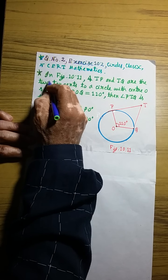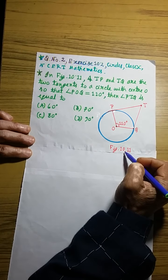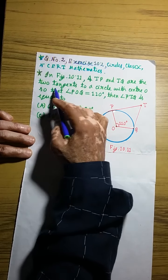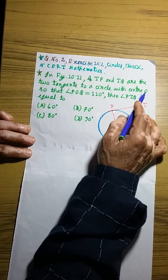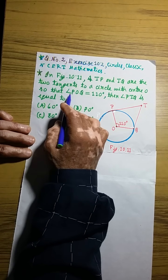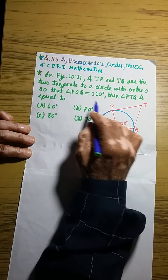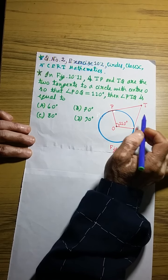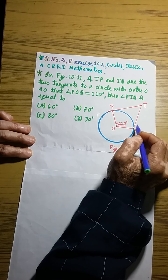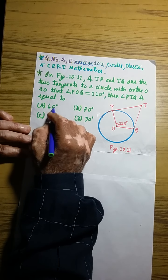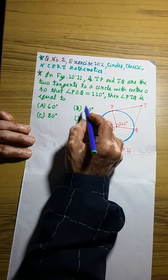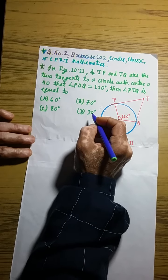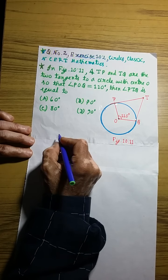Now let us see what the question says. The measure of angle PTQ is equal to: option A — 60 degrees, option B — 70 degrees, option C — 80 degrees, option D — 90 degrees. So to proceed to the solution of this question,